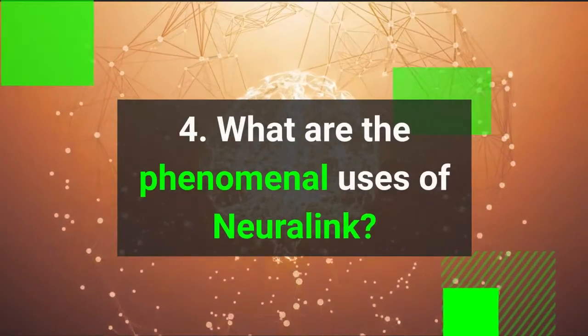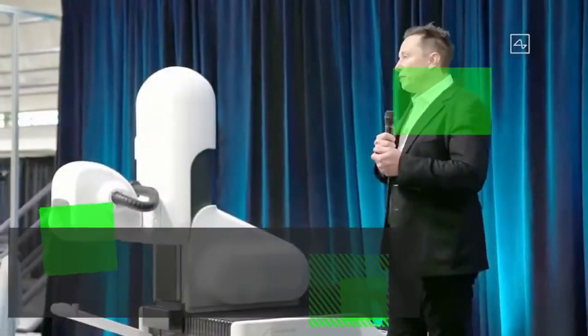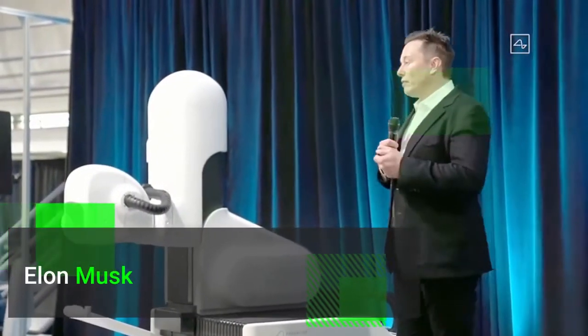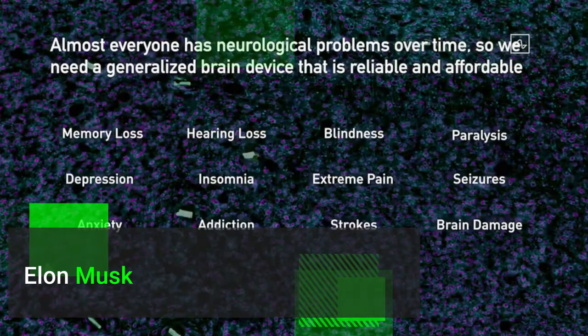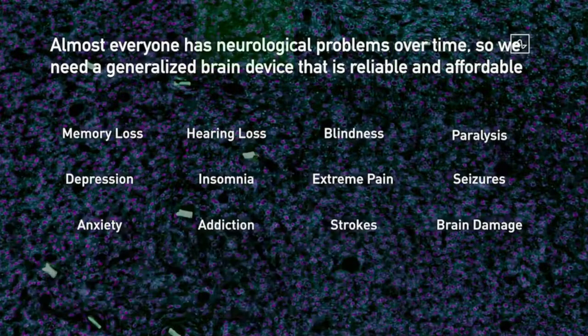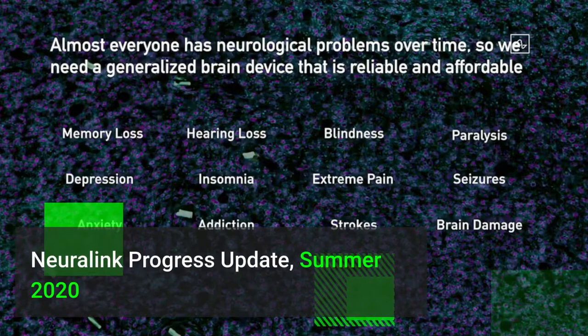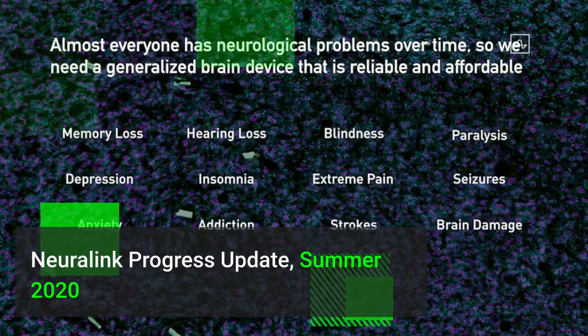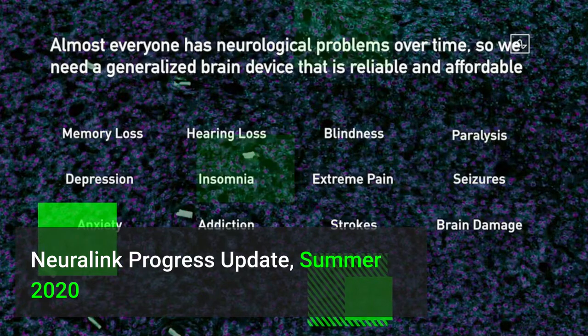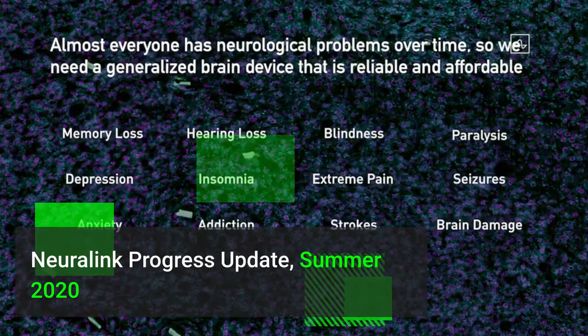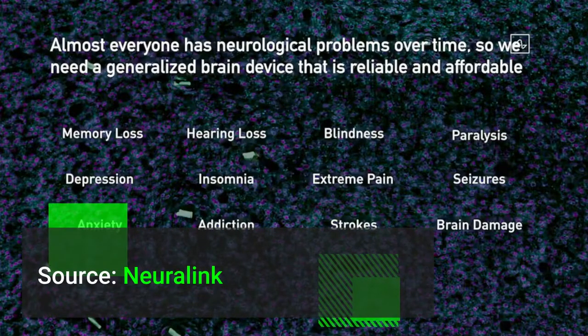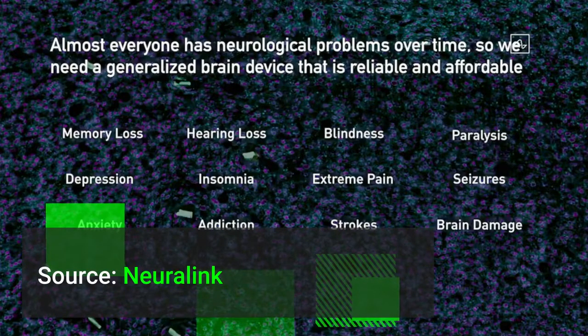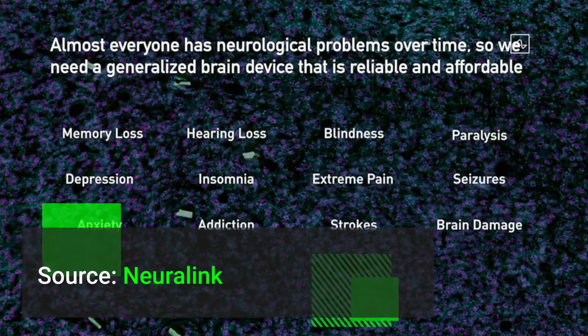What are the phenomenal uses associated to Neuralink? All of your senses, your sight, hearing, feeling, pain, these are all electrical signals sent by neurons to your brain. And if you can correct these signals, you can solve everything from memory loss, hearing loss, blindness, paralysis, depression, insomnia, extreme pain, seizures, anxiety, addiction, strokes, brain damage. These can all be solved with an implantable Neuralink.